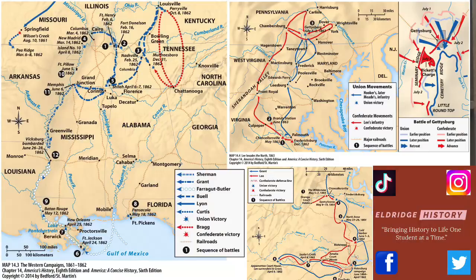Now, the war is going to have some major battles. You're going to have battles on the Eastern Front and the Western Front. The Eastern Front, of course, being from Maryland down to the Carolinas, and the Western Front mostly in Mississippi, Tennessee, down to New Orleans.